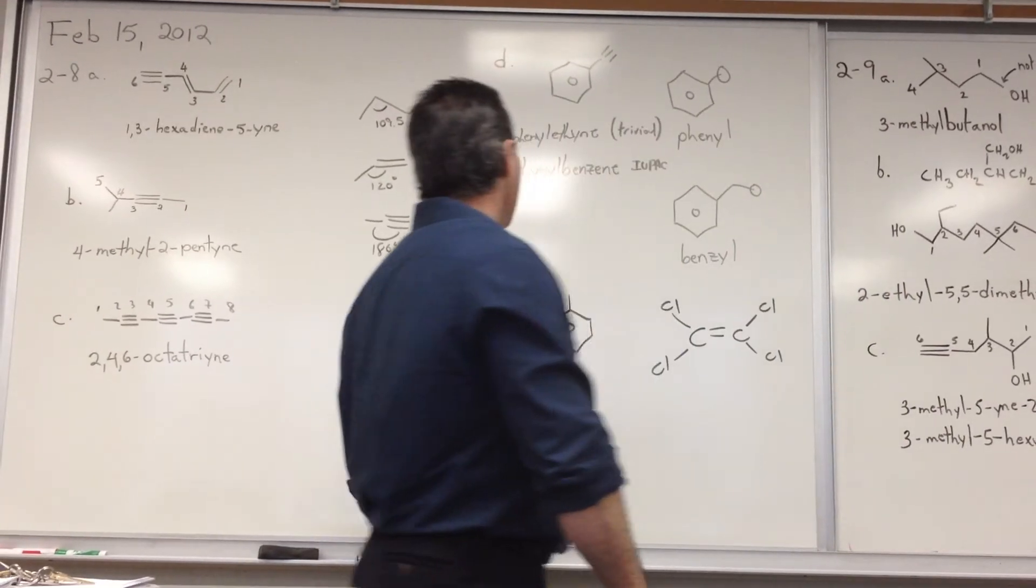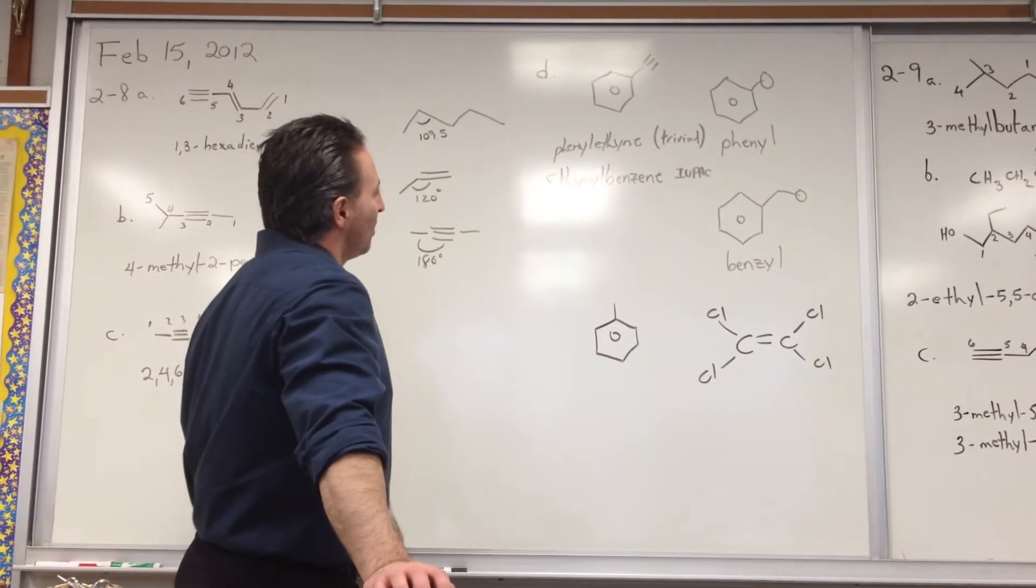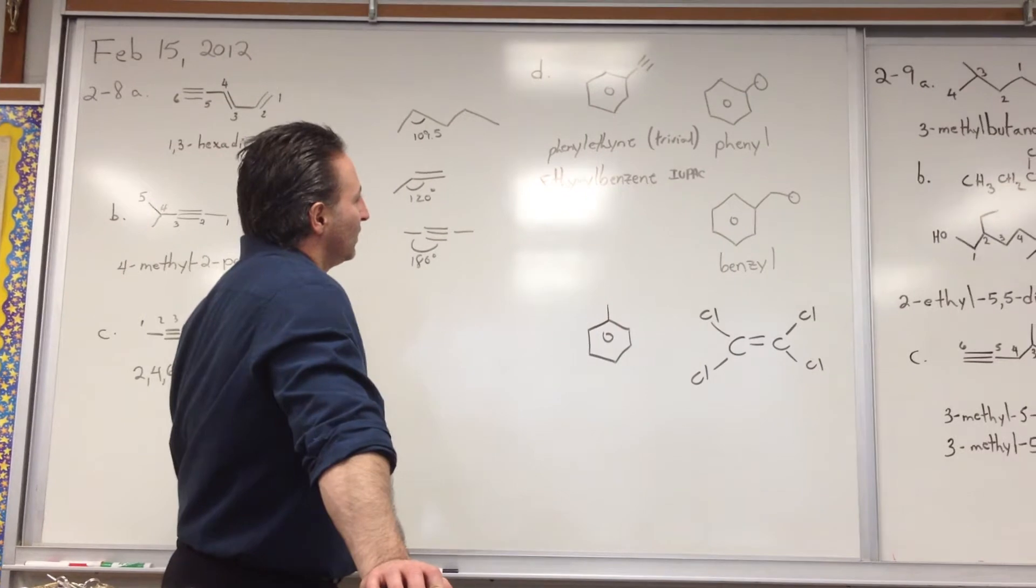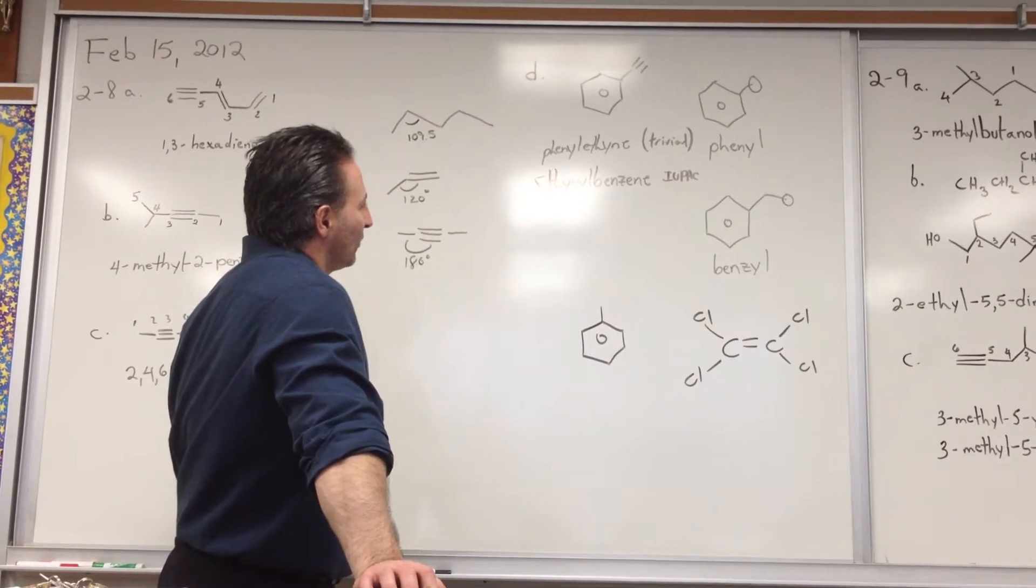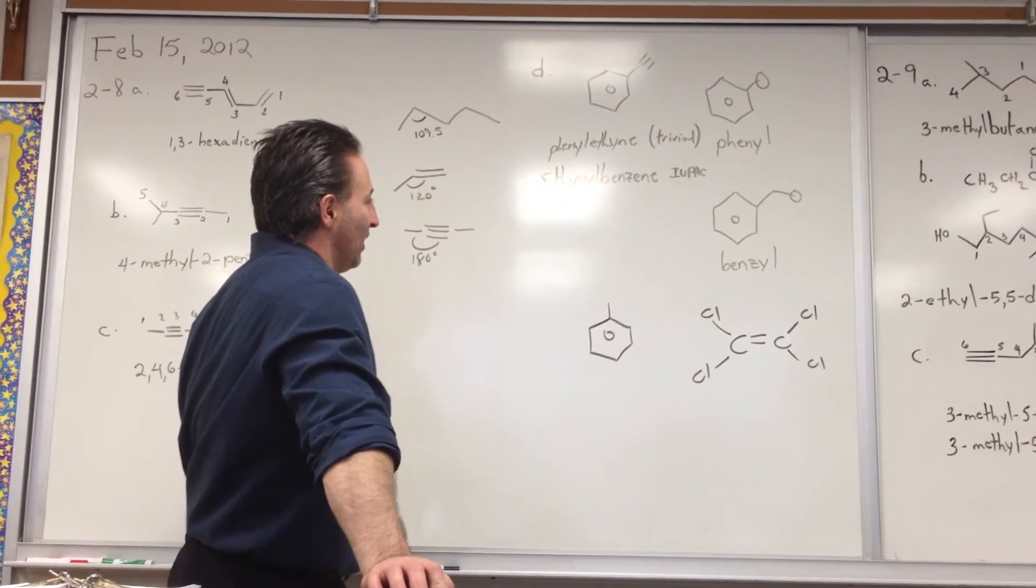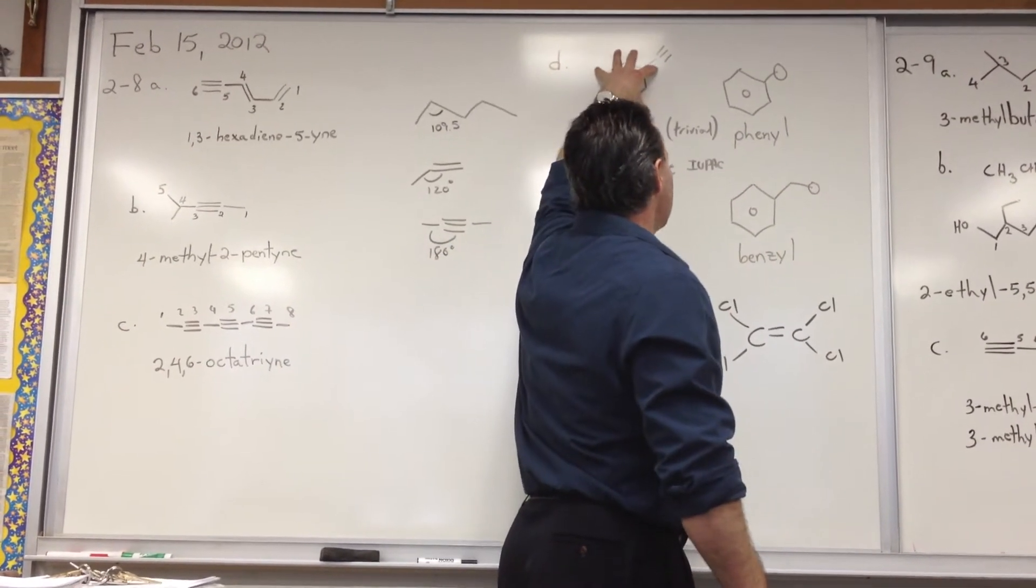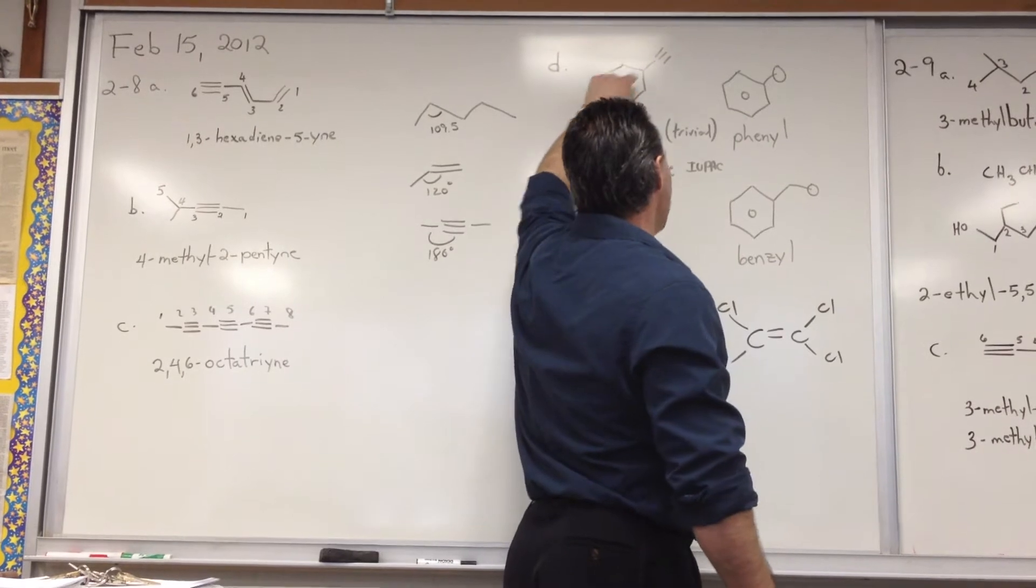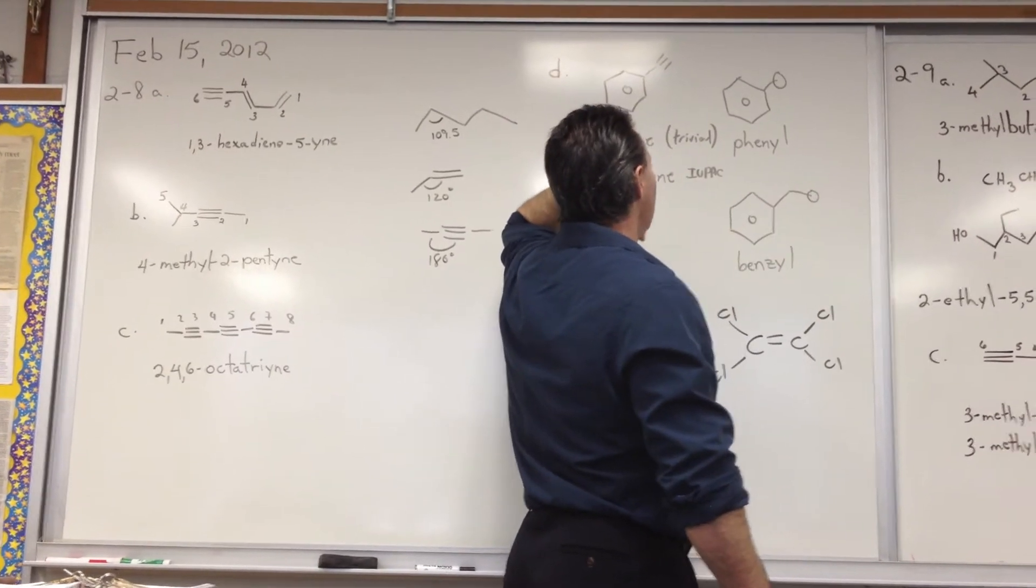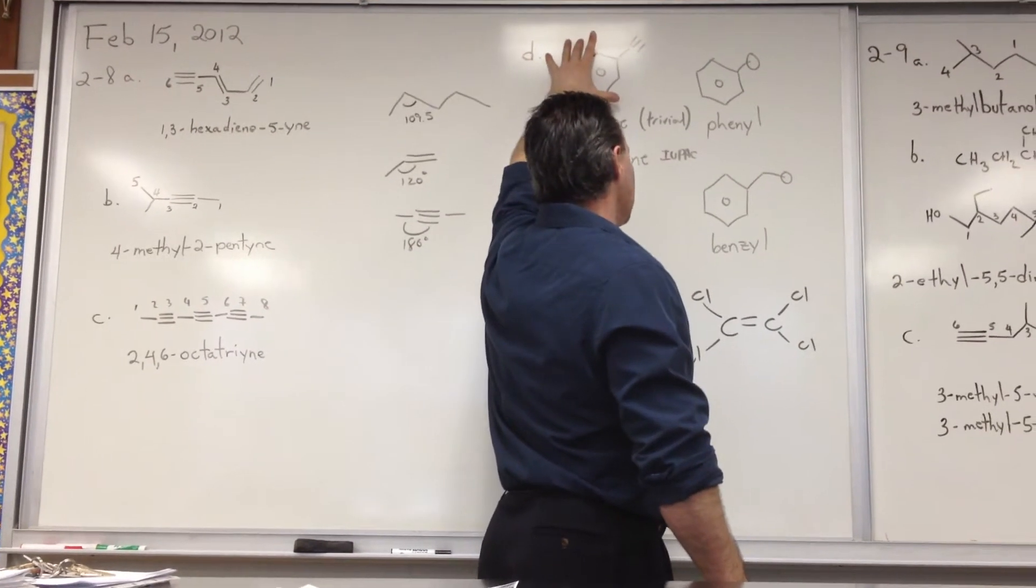Example D, we have a phenyl group with an acetylene attached to it. I originally named it phenylethyne, because there are two carbons with a phenyl group attached. But I guess because the phenyl group is heavier than the ethyl group, it actually takes precedence.